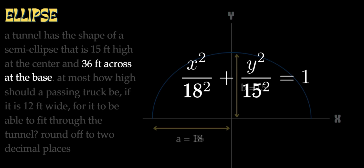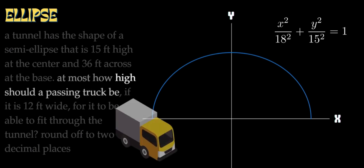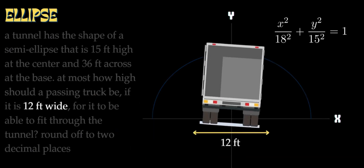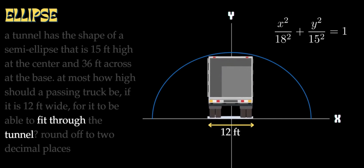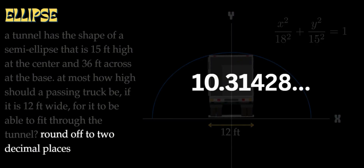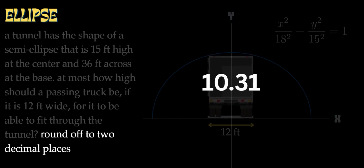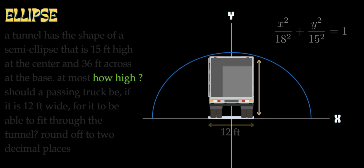We will use only the lane and 3 lines to set up the problem. At most, how high should a passing truck be if it is 12 feet wide, for it to be able to fit through the tunnel? So when we put the truck at 12 feet wide, we need to find the maximum height that will allow it to pass through the tunnel without an accident.